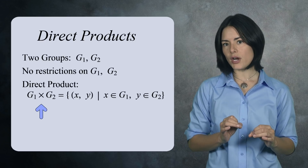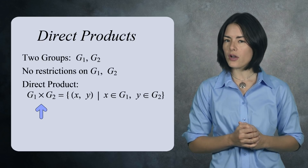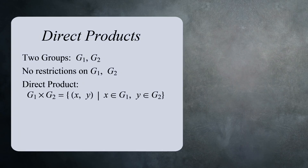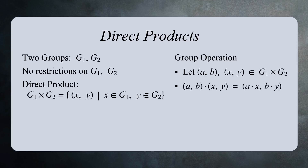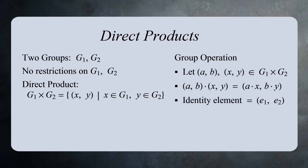The notation for the direct product is the same as a Cartesian product of two sets. The group operation is performed component-wise. Let (a,b) and (x,y) be two elements in the direct product G1 × G2. Their product is defined to be the pair (ax, by) — you just multiply the first components, then multiply the second components. The identity element in this group is (E1, E2), where E1 is the identity element in G1 and E2 is the identity element in G2.